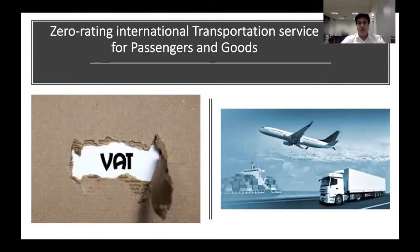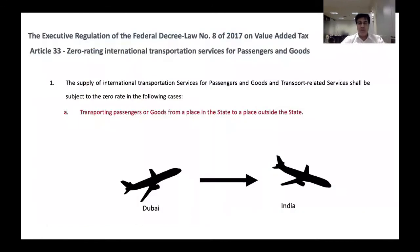Hello friends, welcome to another video on UAVAT. Today we are going to talk about zero rating — when it will be applied for international transport and when it will not be. I picked up Article 33 from the executive regulation, which very clearly says which services where the transport of passengers and goods will be applied as zero rated.